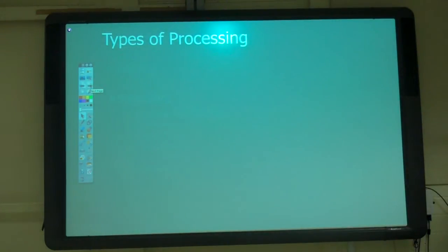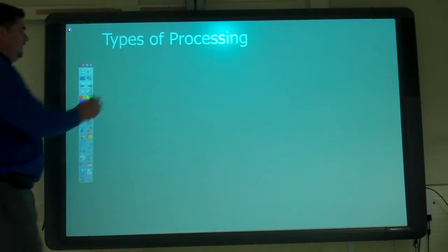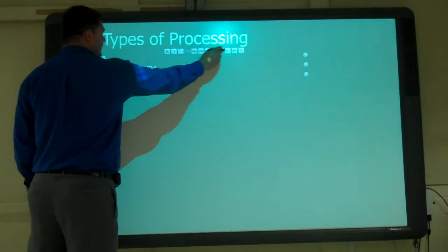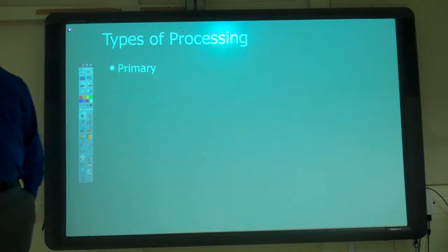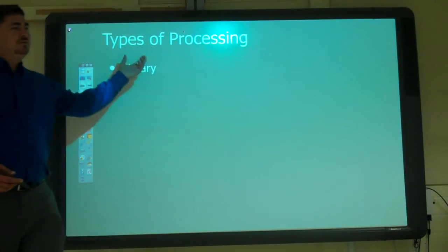We have two main types of processing. What were they? Primary and secondary. So what's primary processing?